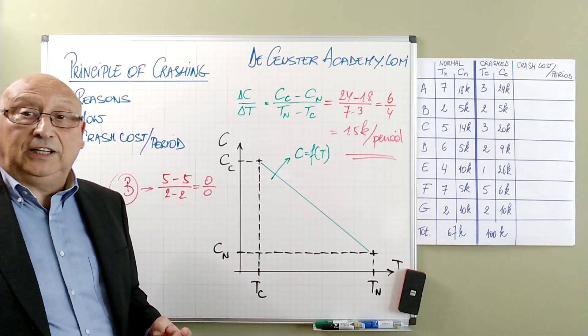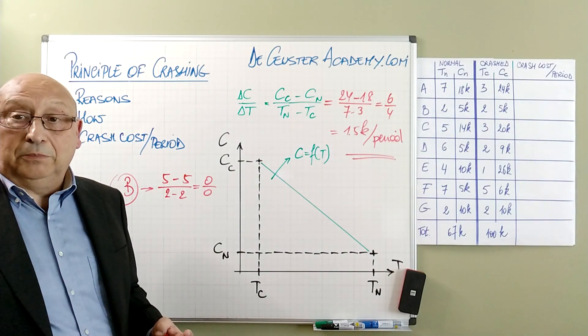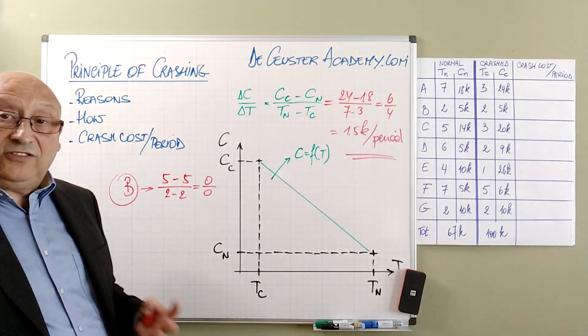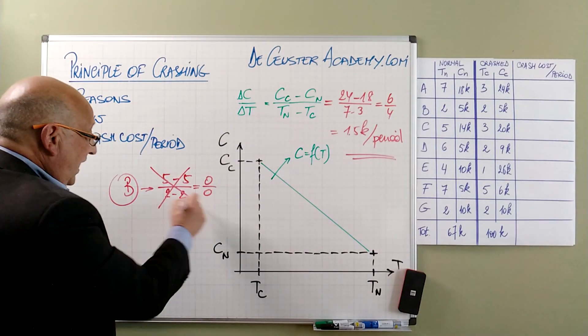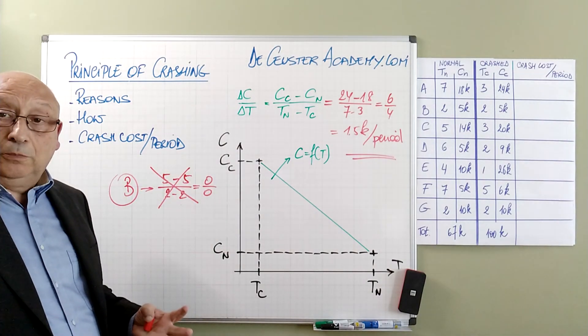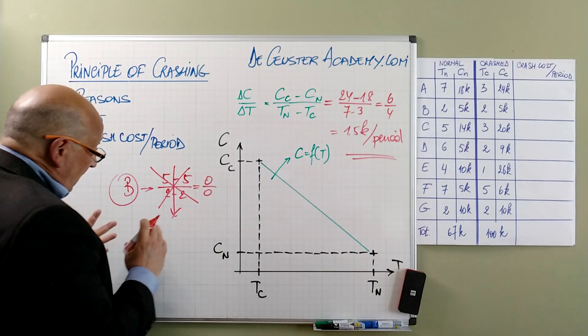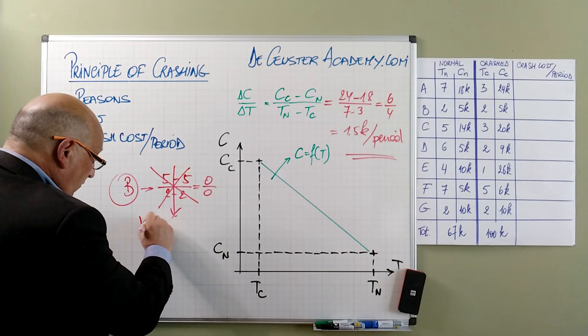Now we know from mathematics that we cannot divide by 0, and that 0 divided by 0 is indeterminate. This basically means we cannot crash B. It's not possible to crash B, so we have to take that into account.